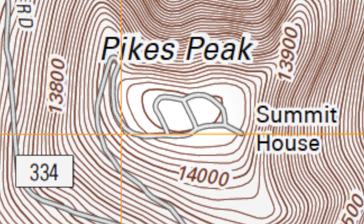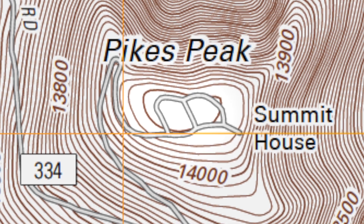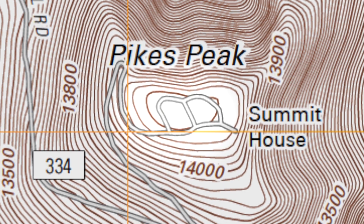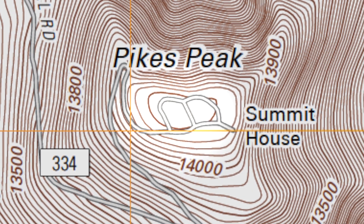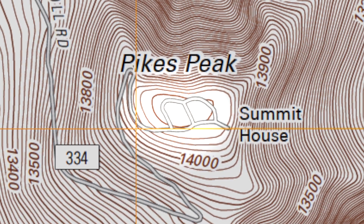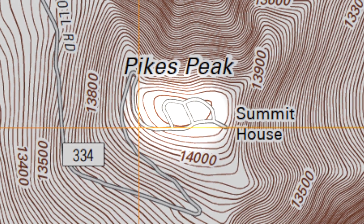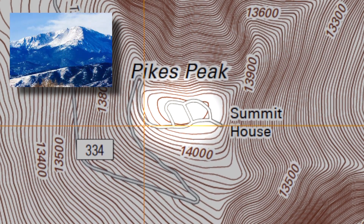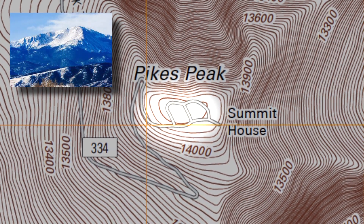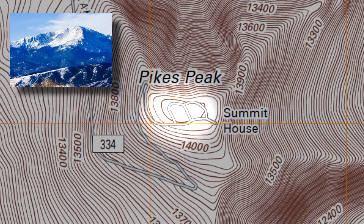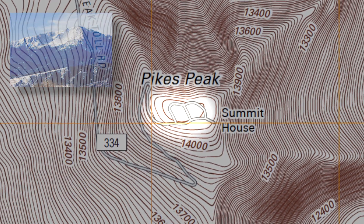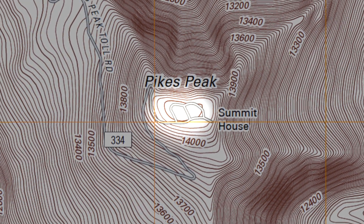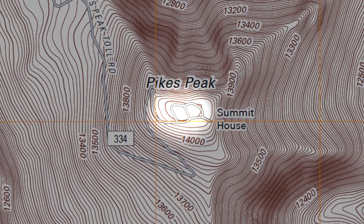In this video we are going to be looking at topographical maps and how they use contour lines to represent elevation changes. We notice in the middle of our screen this is Pikes Peak, one of Colorado's highest mountains. It ranks number 31 and stands 14,110 feet above sea level at its summit.